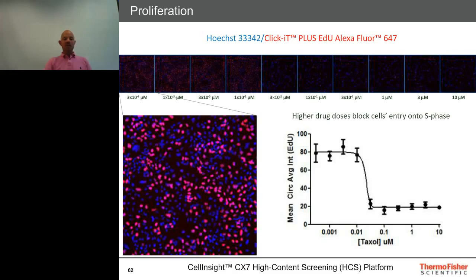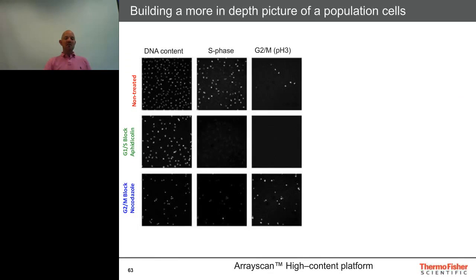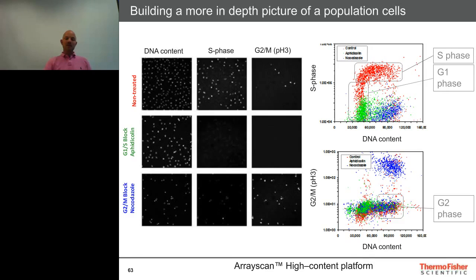This is very important for cancer therapies where we're looking at blocking proliferation. We can also use proliferation to build a more in-depth picture of a population of cells. Here we have S phase cells as well as a marker for G2/M presence — phosphorylated histone H3. We can build almost flow-cytometry-type plots of cellular populations, sampling thousands upon thousands of cells. With different drug treatments — aphidicolin blocking cells in G1/S, or nocodazole blocking them in G2/M — we can gate and show cells in G1, S, or G2 phase, as well as those that are G1/S-blocked or G2/M-blocked.